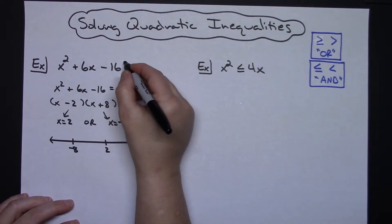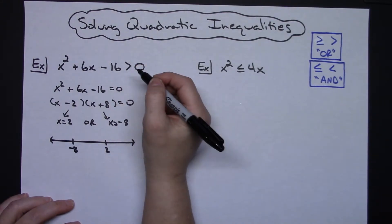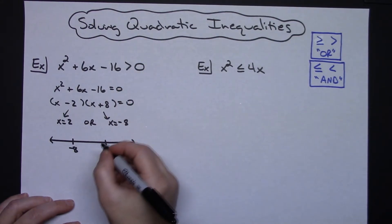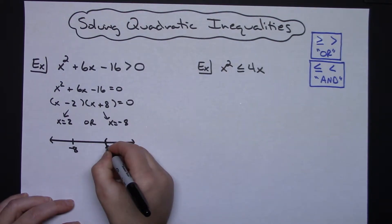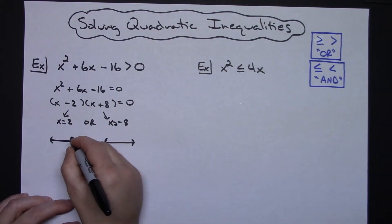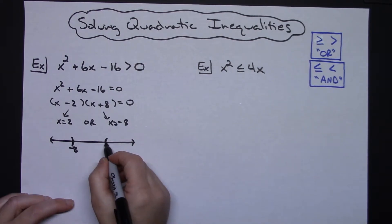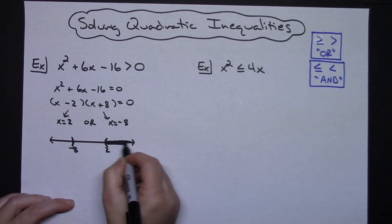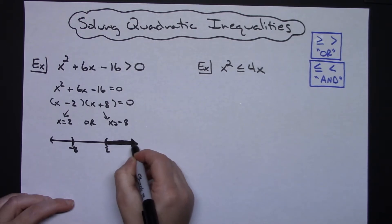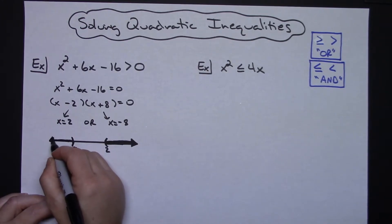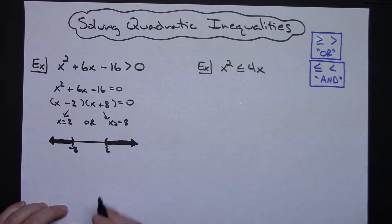So it's going to be greater than 2 or less than negative 8. And with it being just a greater than, then these would be curvy brackets if you're using interval notation. They would be open circles if you're doing the open circle closed dot thing. So we would shade over here to the right of this and then we would shade to the left. This sets up as just a standard OR inequality.